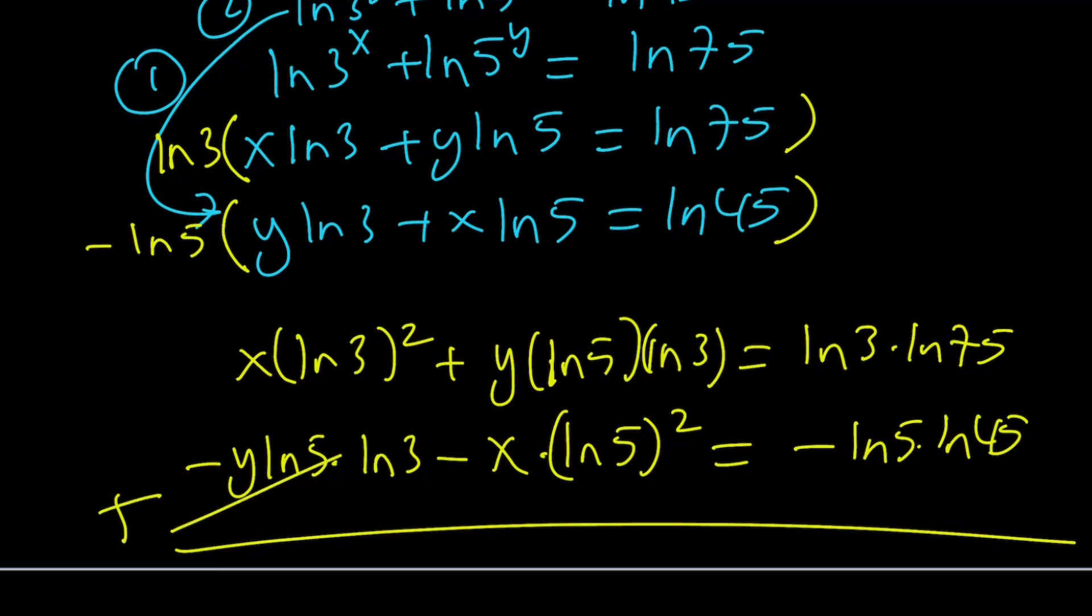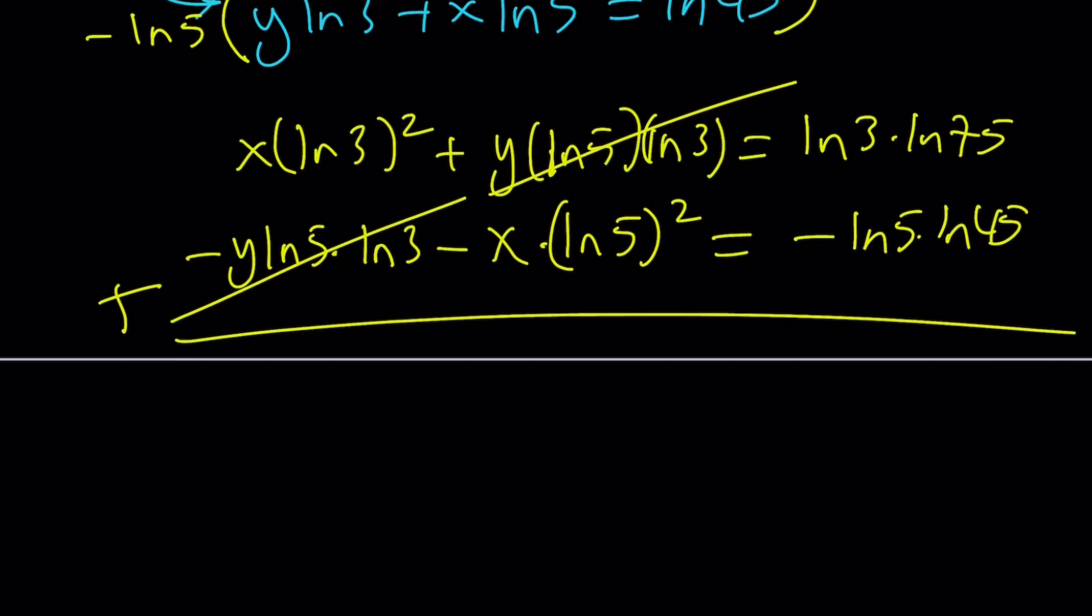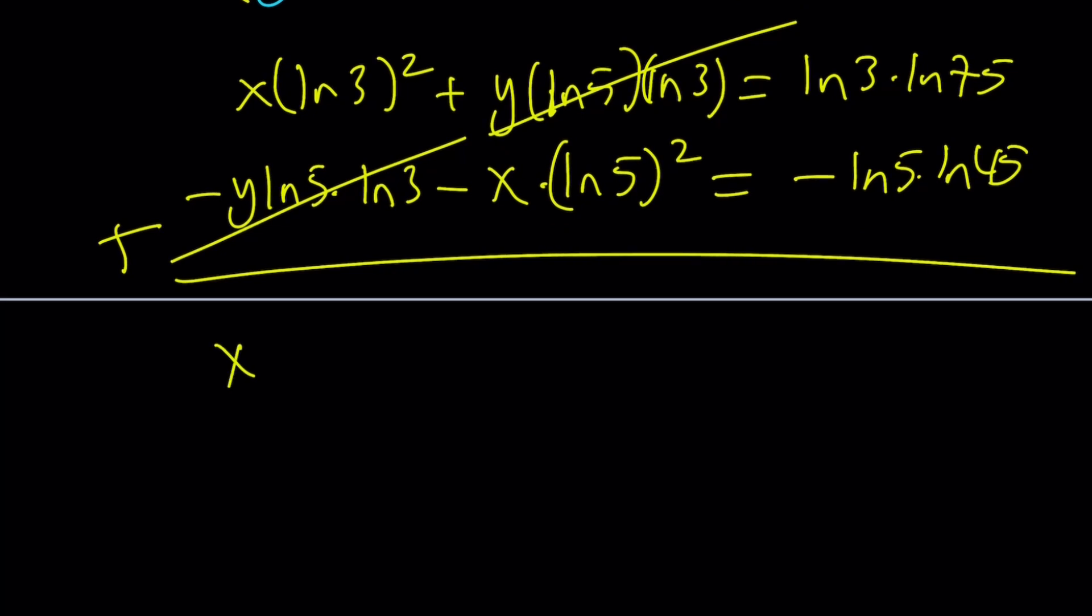When you add these up, the coefficients of y are opposite, so they're going to cancel out. That was the goal. x times ln 3 squared minus x times ln 5 squared equals ln 3 ln 75 minus ln 5 ln 45.